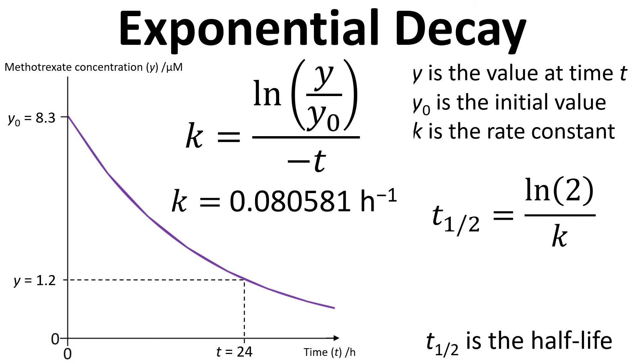If we put all of those values in we get a value of k of 0.080581 hours to the minus one. Then if we put that into the t half equation we get a t half of 8.6 hours. So that's the half-life of the methotrexate in the bloodstream.